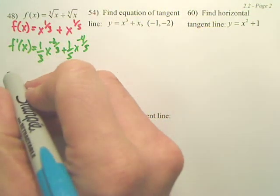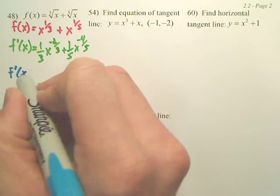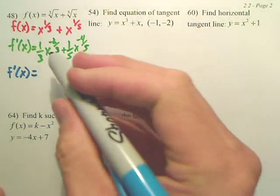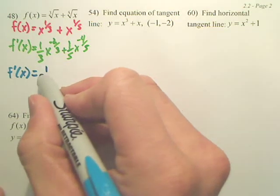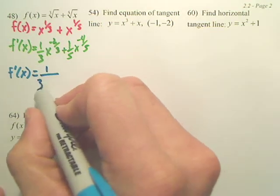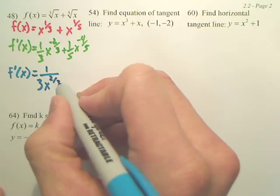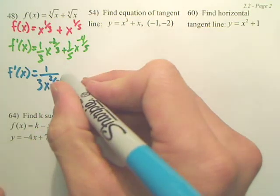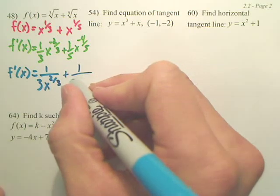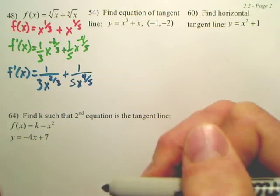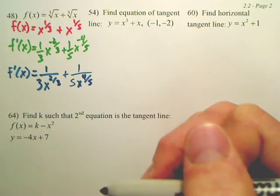Next, let's get rid of the negative powers. So it looks like we're going to have 1 over 3. That's a negative power, it's going to drop to the bottom, x to the 2/3, and then plus 1 over 5, this is going to be x to the 4/5. I'm actually going to leave it like that.